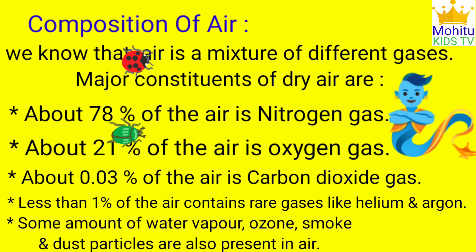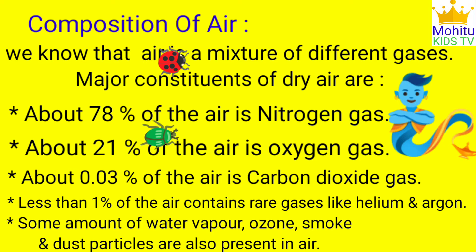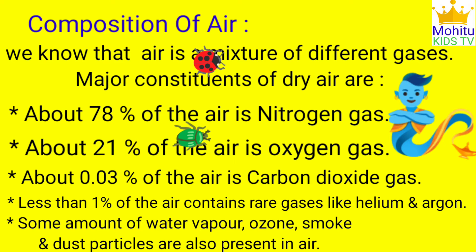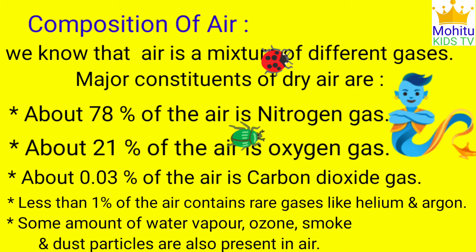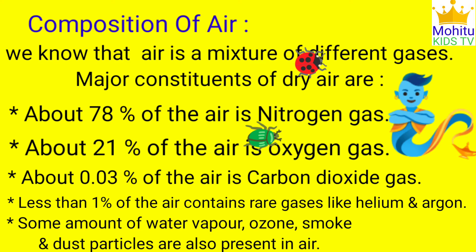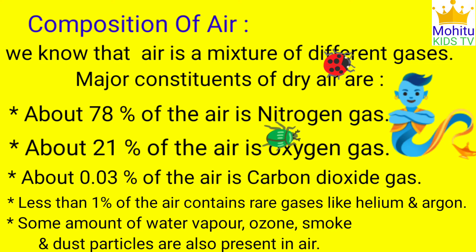The major constituents of dry air are: about 78% nitrogen gas, about 21% oxygen gas, about 0.03% carbon dioxide gas, and less than 1% rare gases like helium and argon. Some amount of water vapor, ozone, smoke, and dust particles are also present in the air.